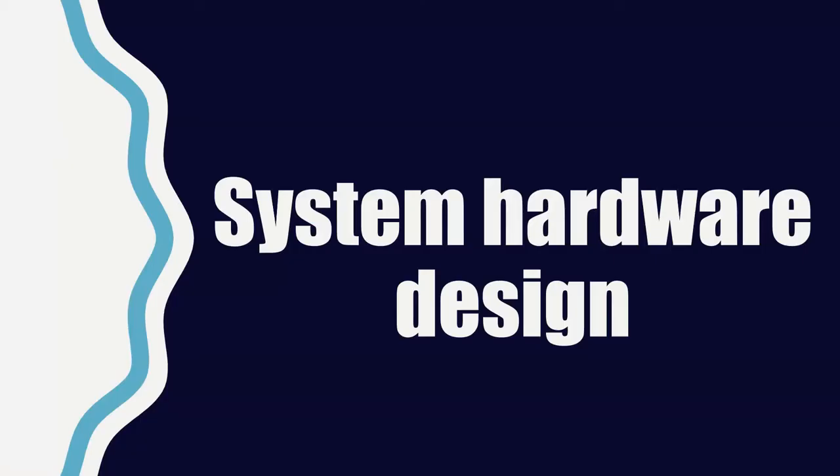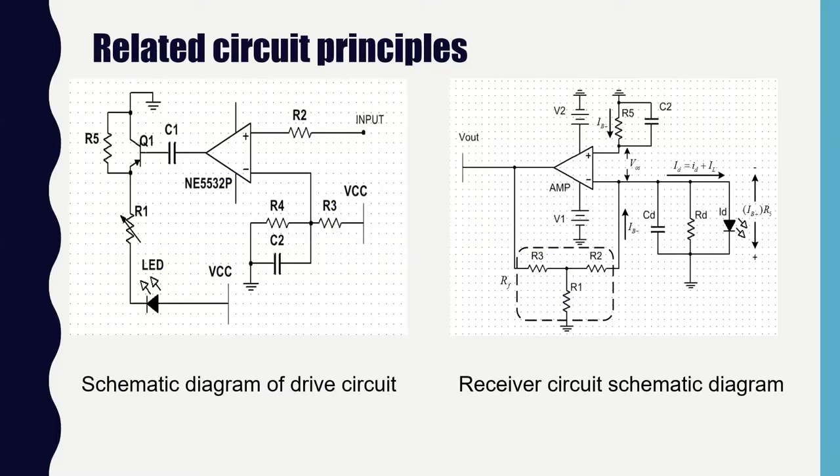The third part is the system hardware design. After the signal is modulated, the system needs to drive the LED light source to convert it into a light signal. However, the driving capability of the single chip microcomputer is insufficient, so an additional transistor is used to improve the driving efficiency. The capacitor C1 increases the switching speed of the LED driving circuit and improves the frequency performance of the entire circuit.